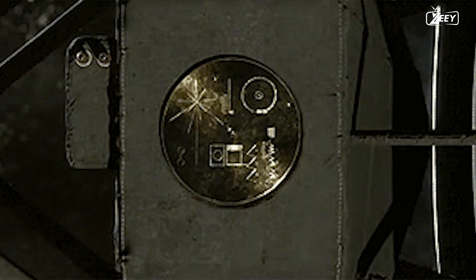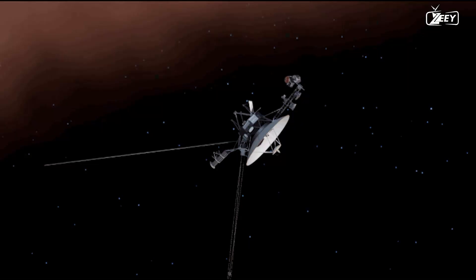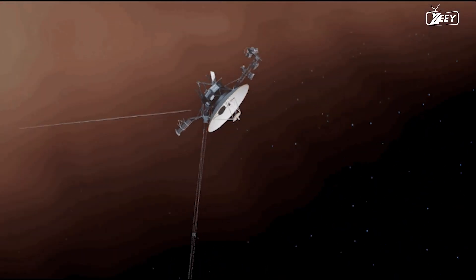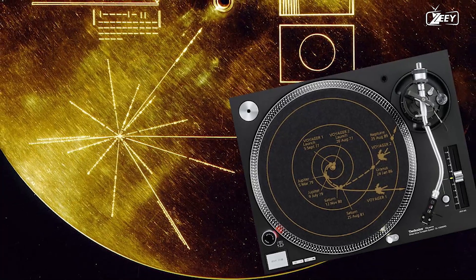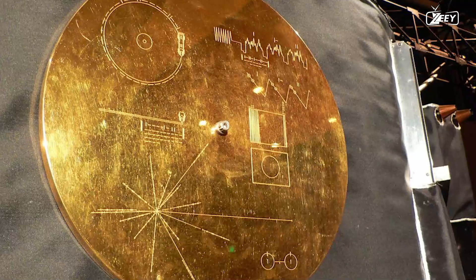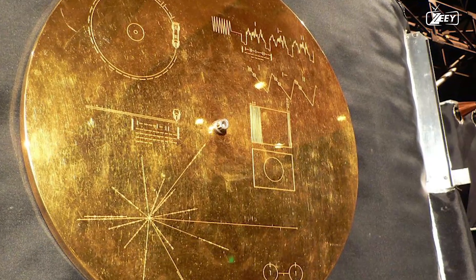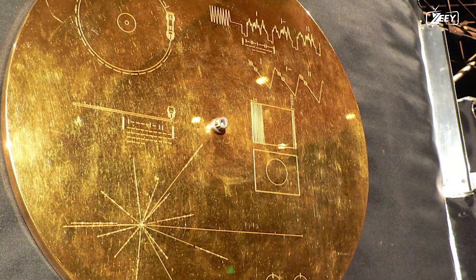Voyager 1 and 2 were able to maximize the power generated by their three radioisotope thermoelectric generators as they hopped from planet to planet. NASA ensured that both probes were equipped with golden records after determining they may travel beyond our solar system.